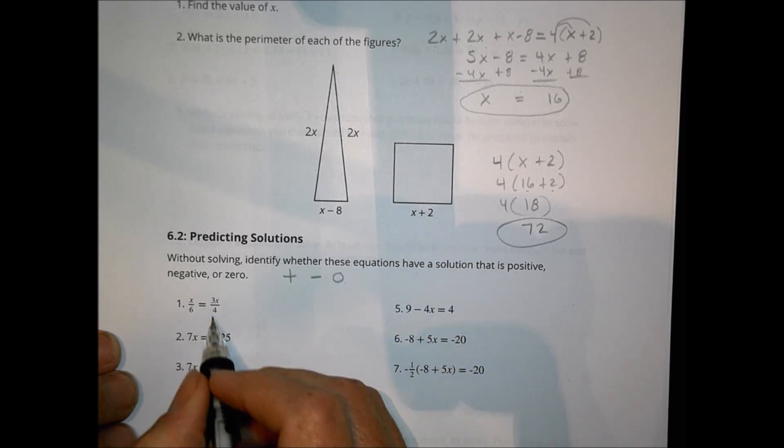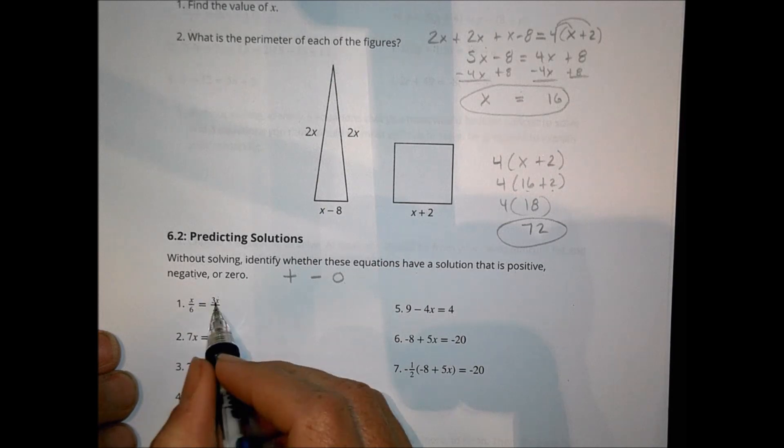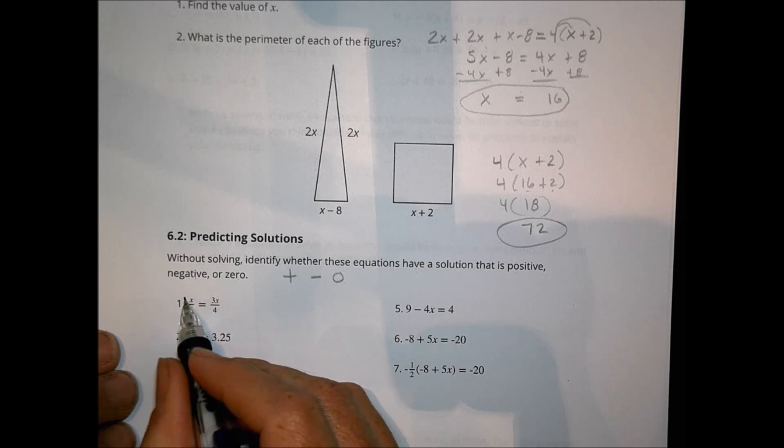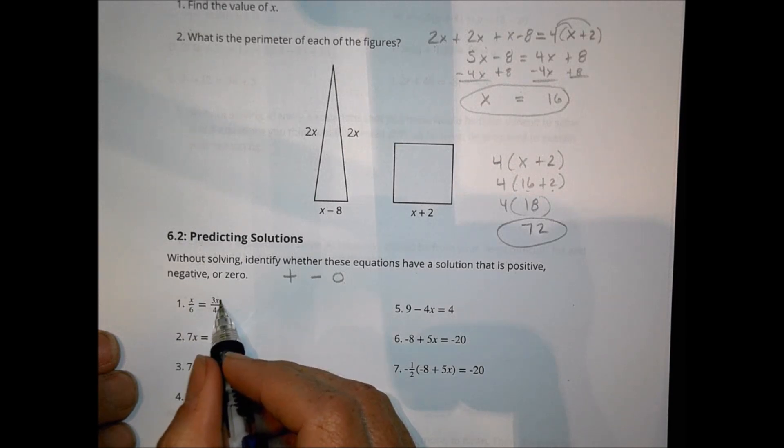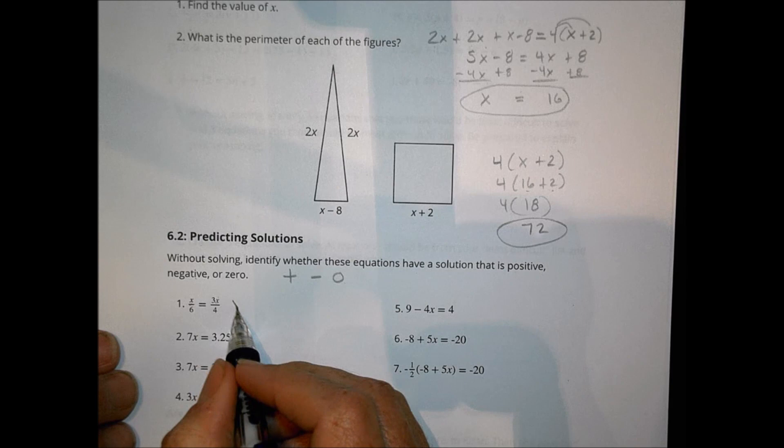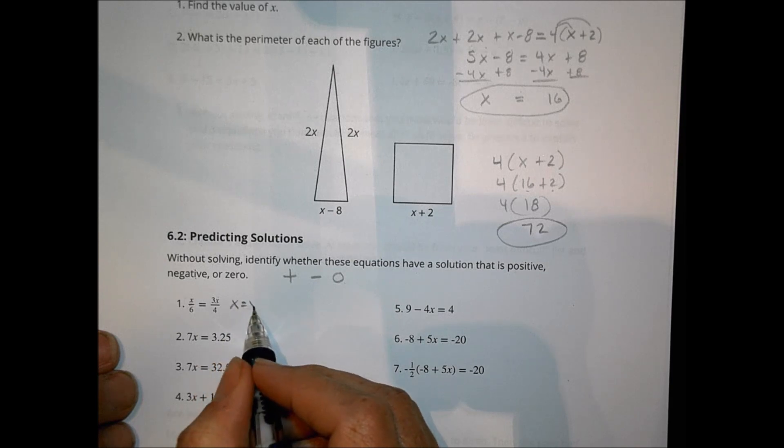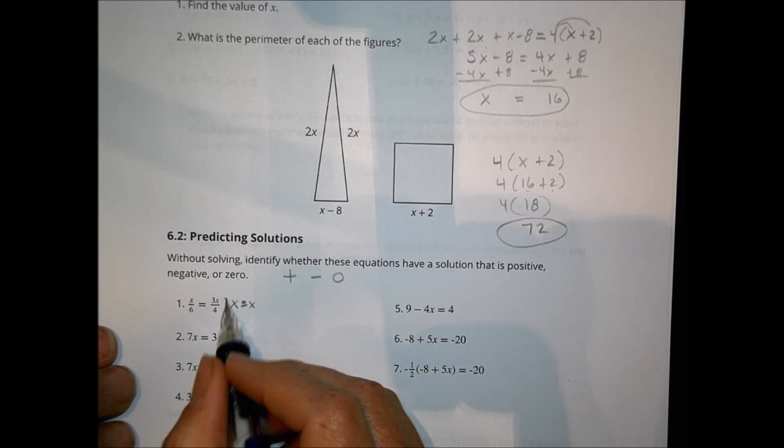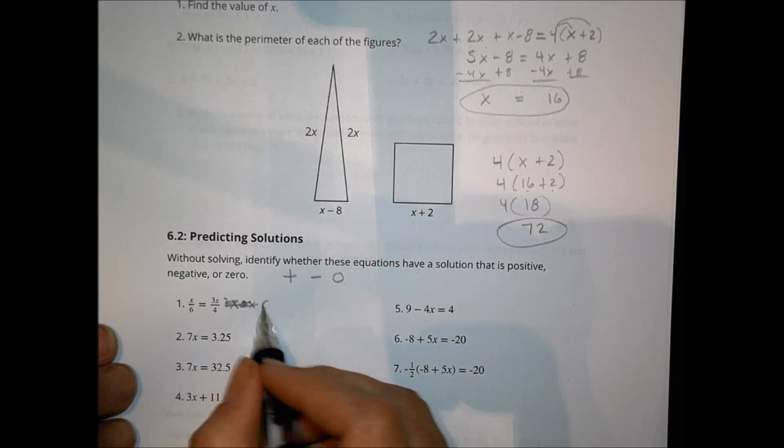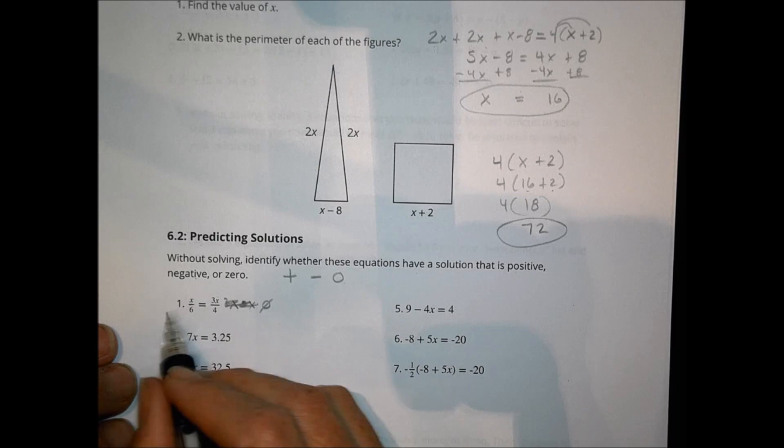When you look at the first one, what you notice is that I have an x value on both sides of the equal sign there. Meaning that if I multiply this side by 4 and that side by 6, I'm going to end up with x on both sides. So the x, because there's a number in front of it, because x equals some number, x needs to be a value of 0 in order for this to be true.